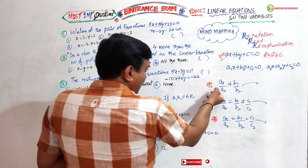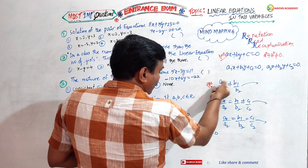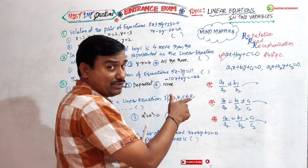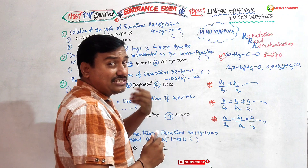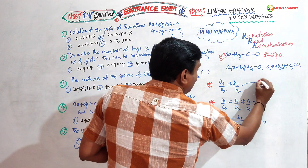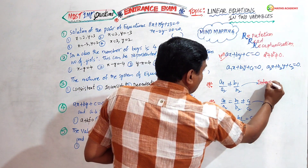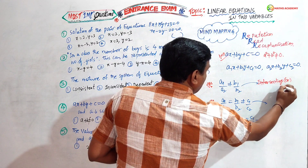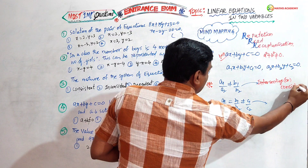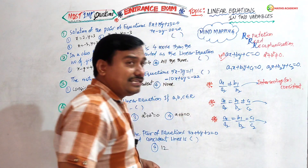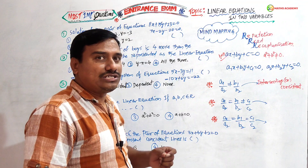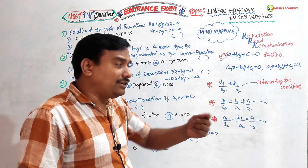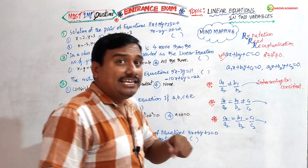First condition: a₁/a₂ ≠ b₁/b₂ — both are not equal — then the nature of the linear equations will be intersecting, or we can call it consistent. Depending on the question option, if they ask consistent or inconsistent we use this, and if they ask intersecting or parallel we use this.